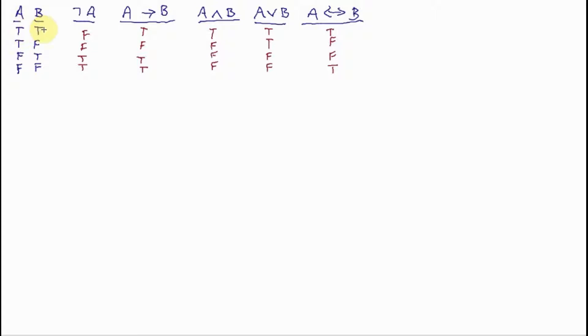Both A and B are true, then this WIF, A and B, comes out true. Under all other circumstances, where one or both of them are false, then it comes out false.